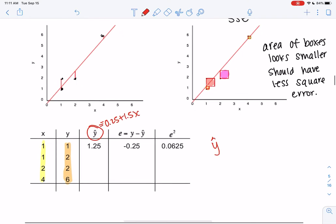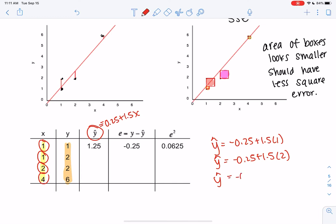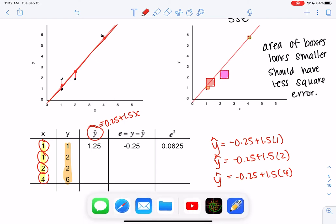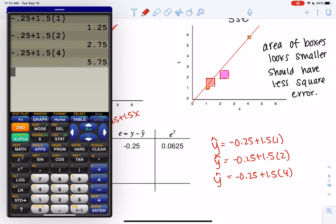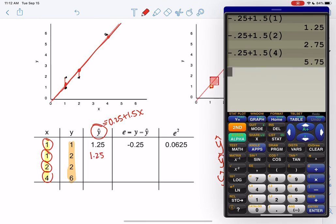So we're going to do the same thing and find all the y hat values from the line. So we'll do negative 0.25 plus 1.5 times 1. Plug in all the x's. y hat is negative 0.25. I'm not going to do 1 again. You can just repeat that number. 2. And then we'll plug in 4. So these are representing the points on the line. And we'll compare those to the actual data values. So negative 0.25 plus 1.5 times 1. Second enter is your best friend. Saves you a lot of time. And so we get 1.25. We get 1.25 again. We get 2.75. And we get 5.75.